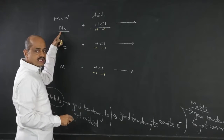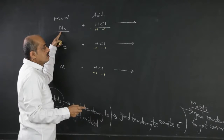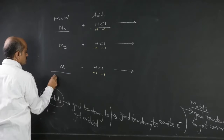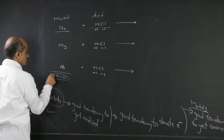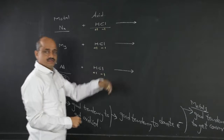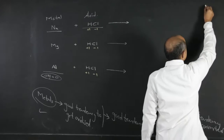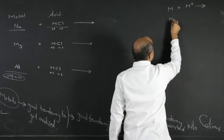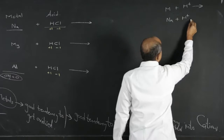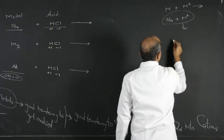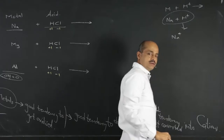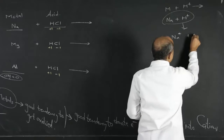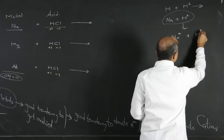During a reaction of metal with acid, the metal carries oxidation number zero in its elemental form. Metal reacts with free H+ ions from acid. For example, sodium donates one electron, which is accepted by one H+ ion, giving nascent hydrogen.